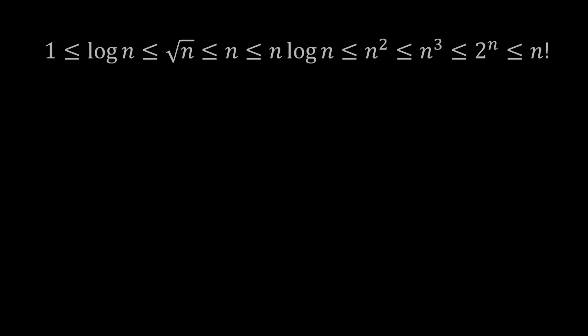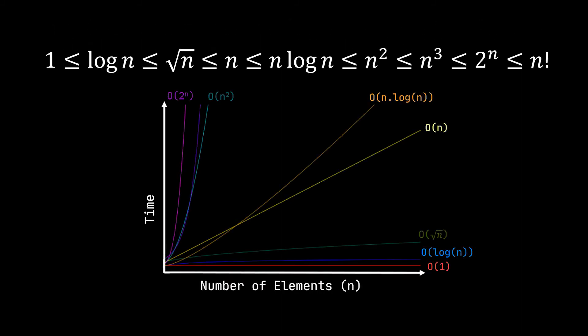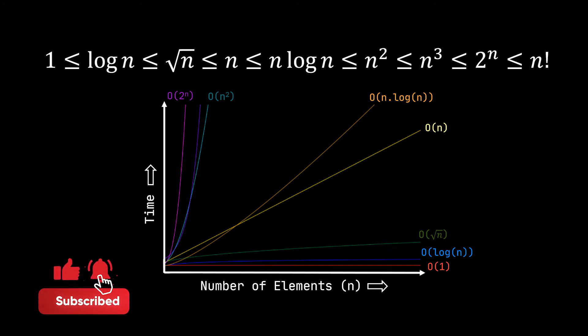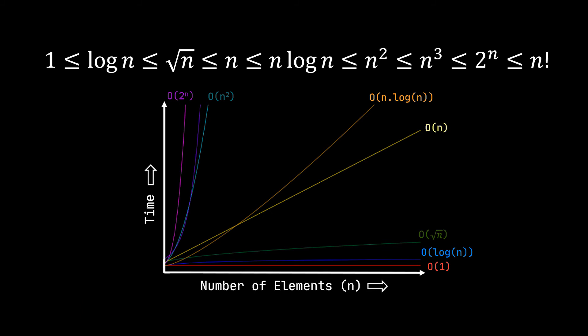What you see now are the most common functions used when it comes to complexity and Big O notation, ordered with respect to which is faster and which is slower. There are quite a few of them and we have only covered three. You may be thinking: when do I have a log(n) time complexity or an n·log(n) complexity? Let's take an example.